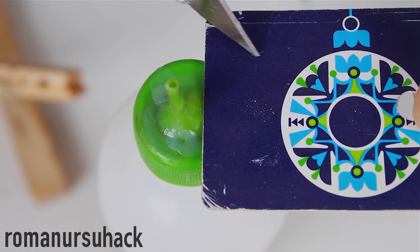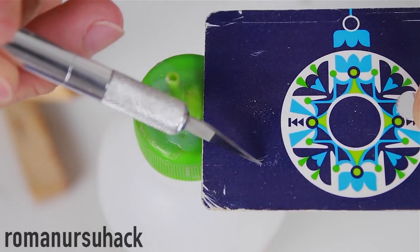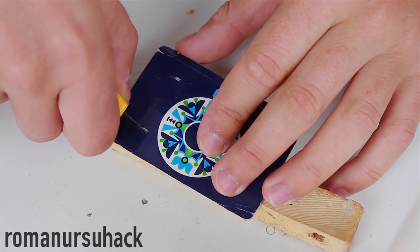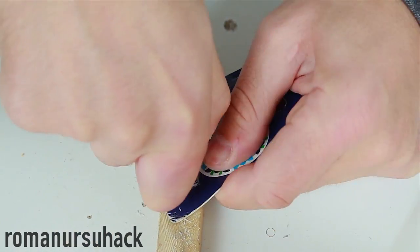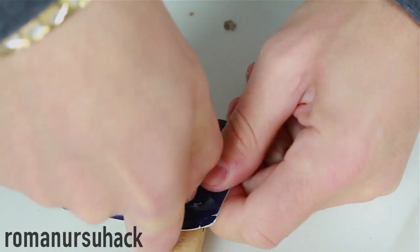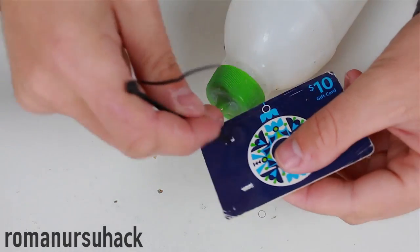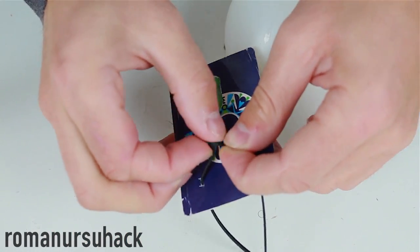Rest the card on the bottle and mark out the size of the cap on our card. Based on those marks, we should make some holes. So we take a knife and cut. All that's left is to fix the card to the cap and test it out.